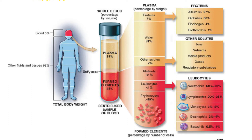The other two percent solutes are ions, nutrients, waste products, gases, and regulatory substances. Main ions are sodium, calcium, potassium, magnesium, etc. Nutrients are carbohydrates and glucose. Waste products are nitrogenous substances like uric acid, urea, ammonia, and creatinine. Gases include oxygen, carbon dioxide, and nitrogen. Regulatory substances are mainly hormones and enzymes.